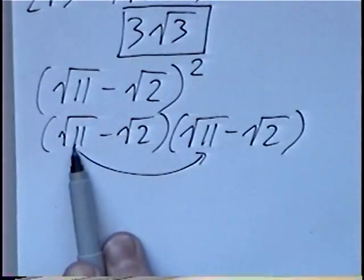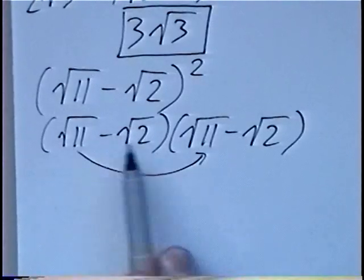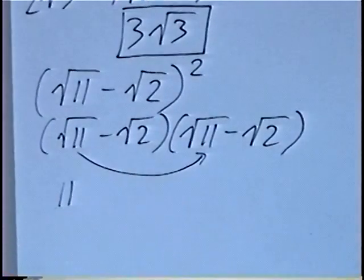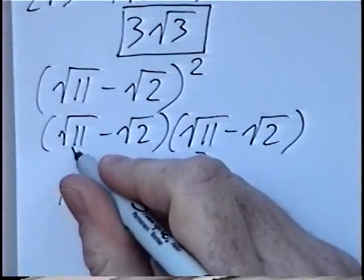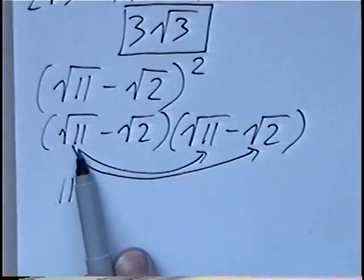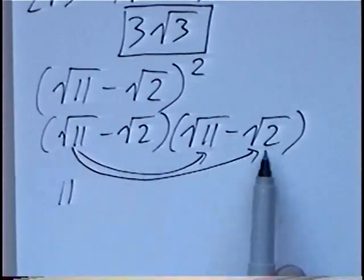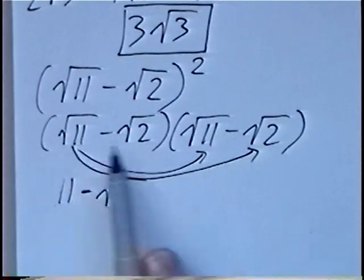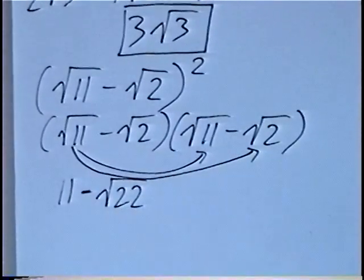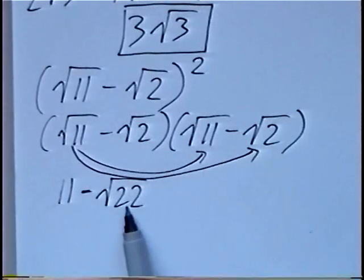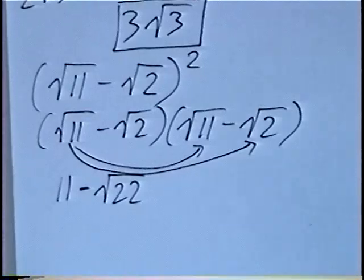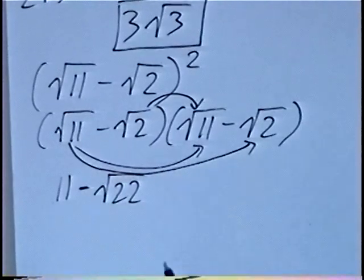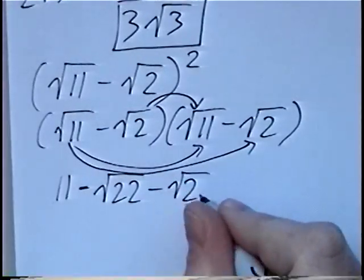Multiplying the first terms: radical 11 times radical 11. If you multiply the same radical twice, you get a pair of 11s, and taking the square root gives 11. Multiplying the outside terms: radical 11 times radical 2, with the minus from the second term — 11 times 2 is 22 — giving minus radical 22. Multiplying the inside terms: negative radical 2 times radical 11, which again gives minus radical 22.